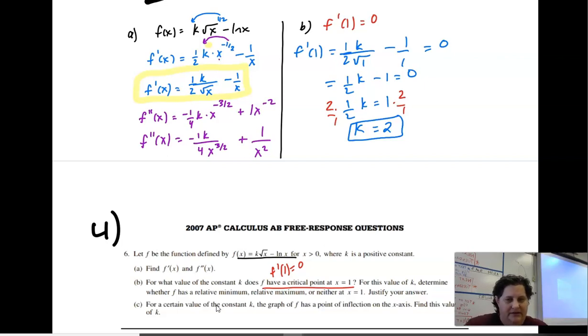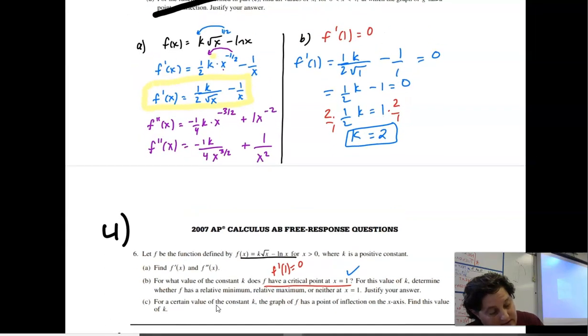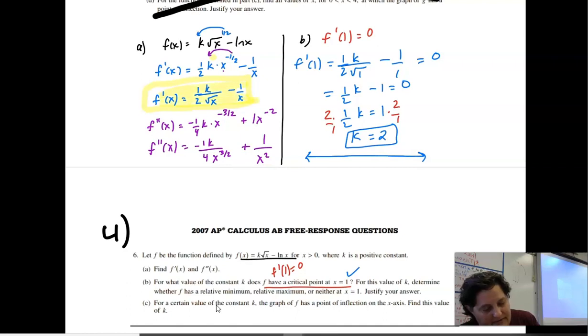For what value of K does the constant have a critical point of X equals one? I figured that out. For this value, determine whether it's a max, min, or neither. That's a sign line graph, right? For this value of K, K is constant. I got to go back to my X equation. K is two. So my equation is going to be one over two times two over square root X, which is just going to cancel out. So I'm just going to do one over square root X minus one over X.